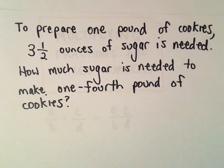So suppose we want to make not so many cookies - we only want to make a fourth of a pound of cookies. And we want to know how much sugar we should use. So we have to scale things down a little bit.